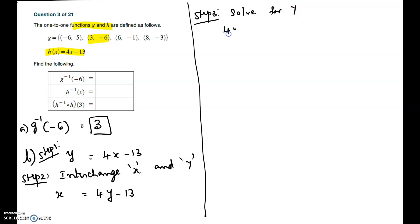So 4y - 13 = x. You move the -13 to the other side, which becomes +13. Then you divide both sides by 4. So you will have y = (1/4)x + 13/4.